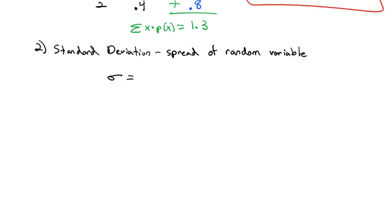using the formula that sigma, the standard deviation, is equal to the square root of the sum of the difference between the mean and the value squared times the probability of the values.